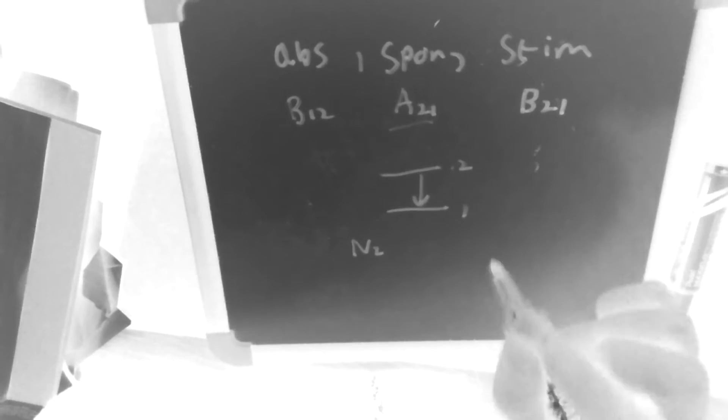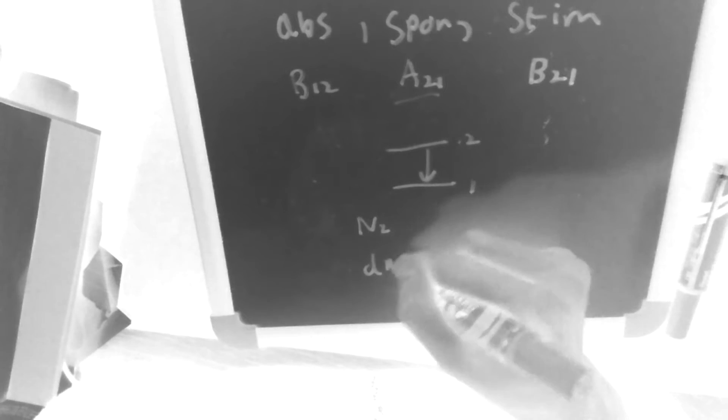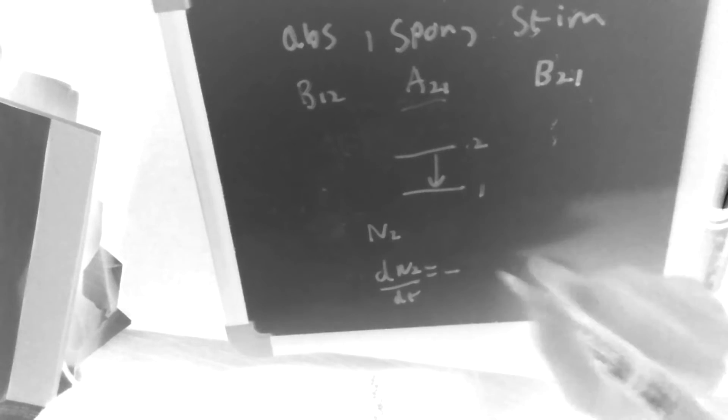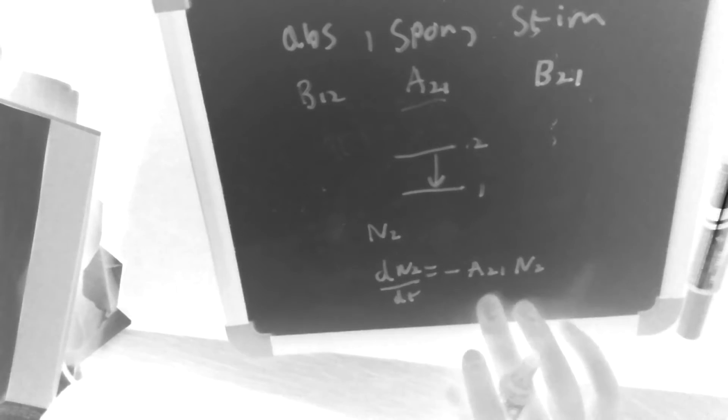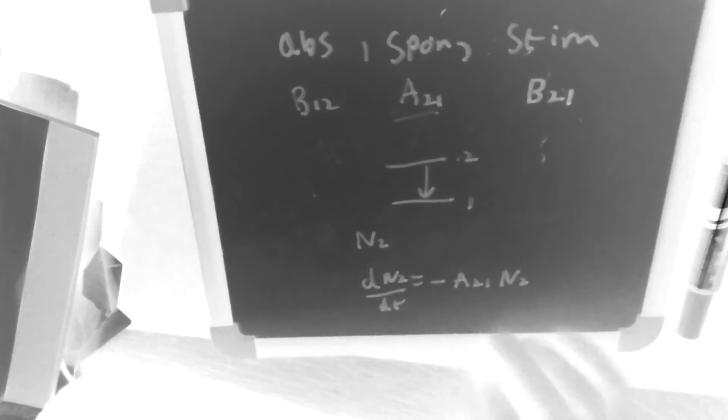So let's imagine we have N2 atoms per unit volume. Then the rate of change of N2 must be equal to minus A21 times N2. So that's the probability that a single atom per unit time will decay times the total number of atoms. That should be straightforward and that's simple probability. And that's the definition of A21.